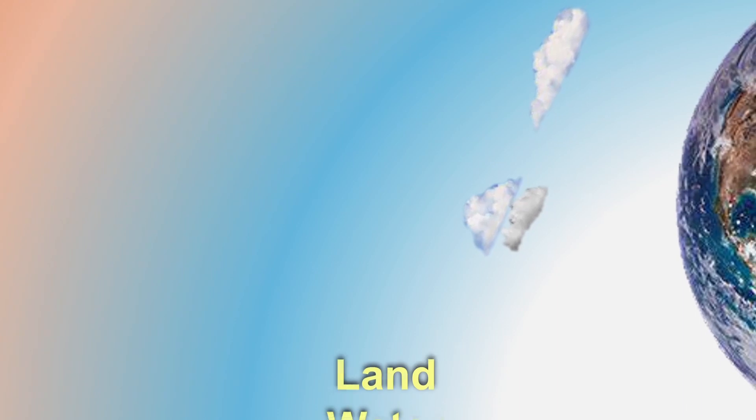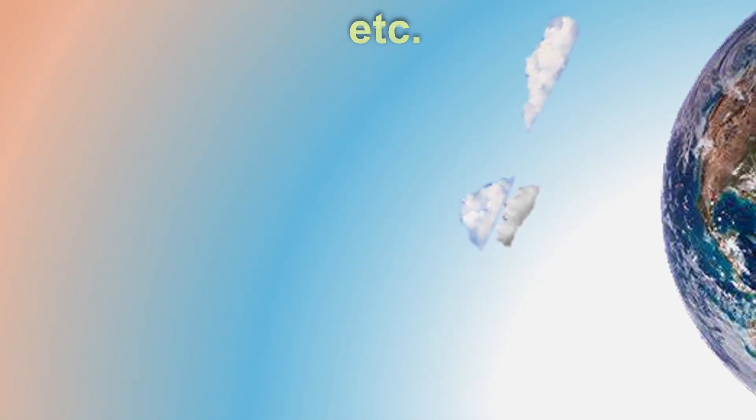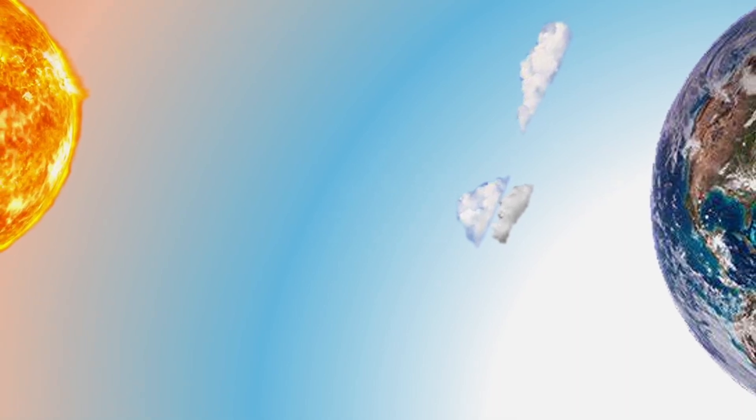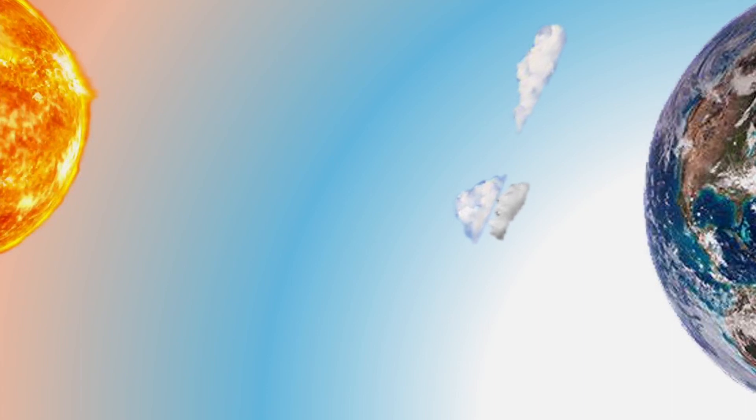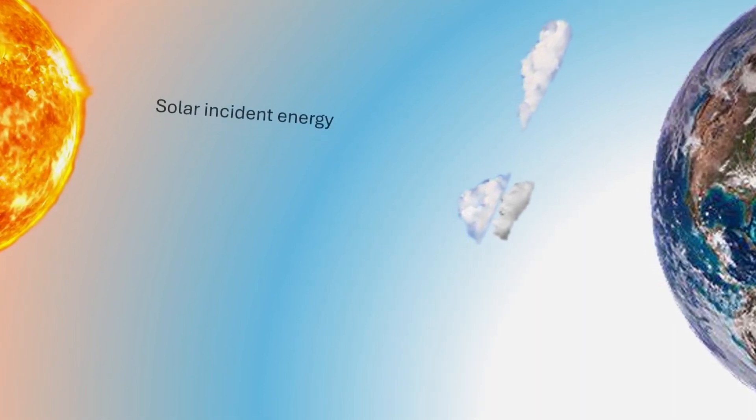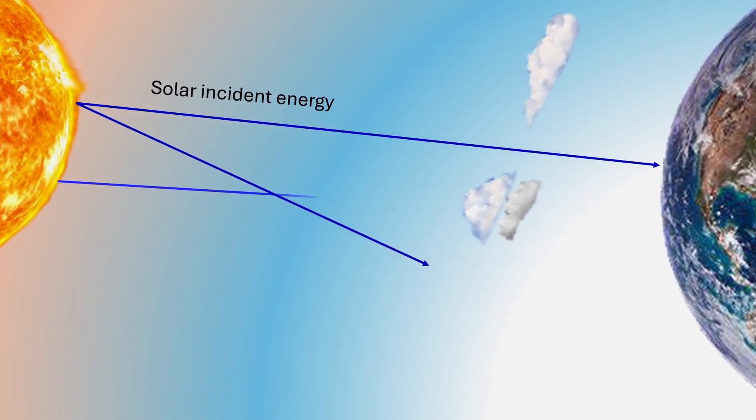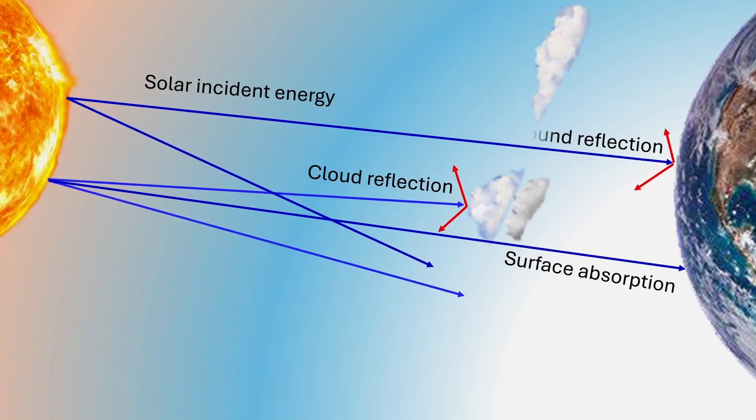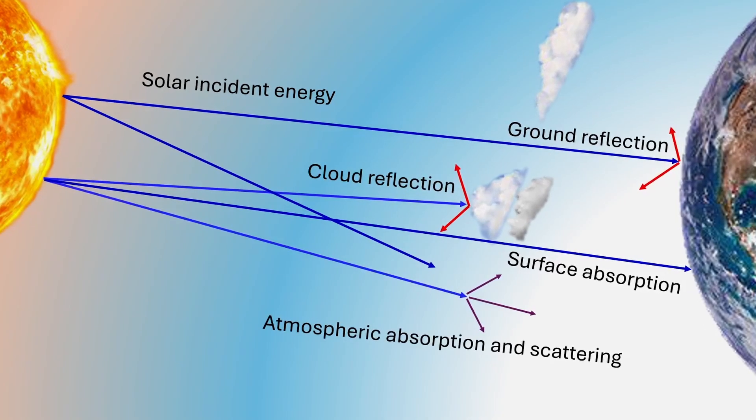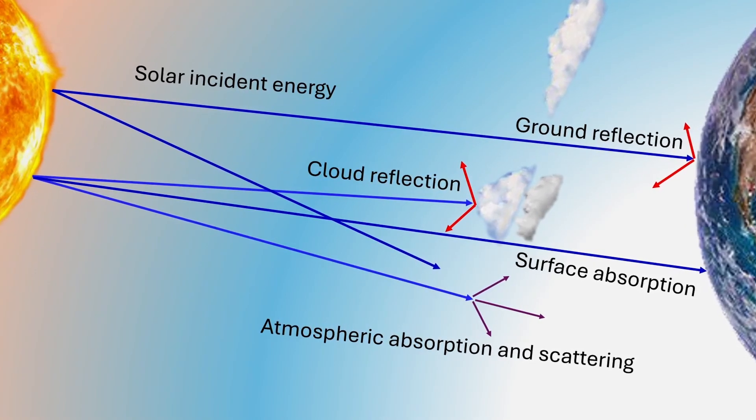The earth's surfaces such as land, water and ice receive solar radiations from the sun, but not all radiations reach them directly. Some solar radiations are reflected back into space by clouds and the earth's surfaces. Others are absorbed by the atmosphere and the earth's surfaces, and a part of these radiations are scattered by the atmosphere.